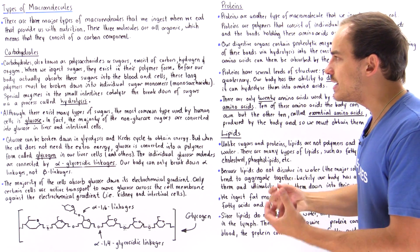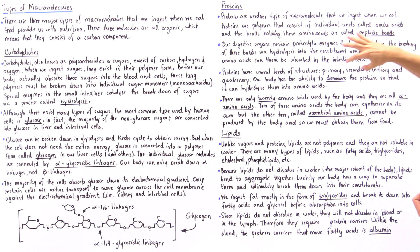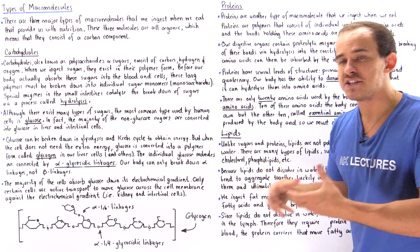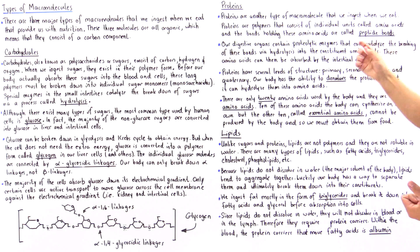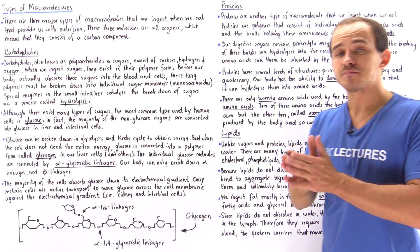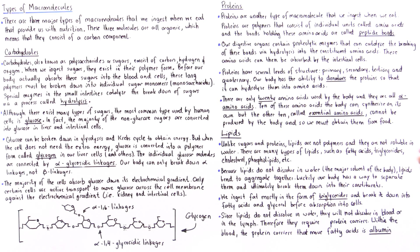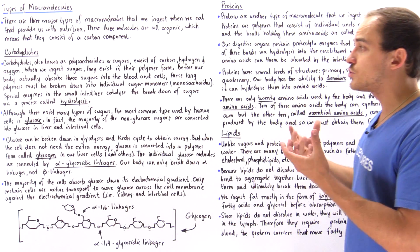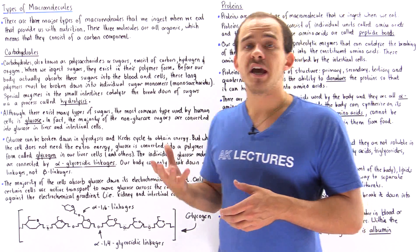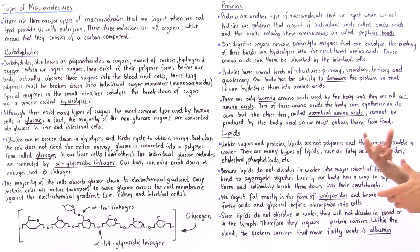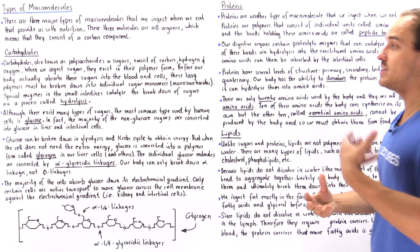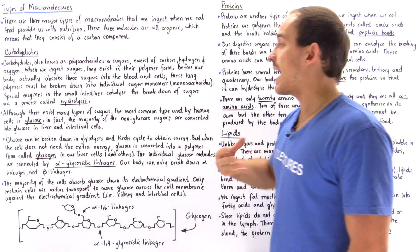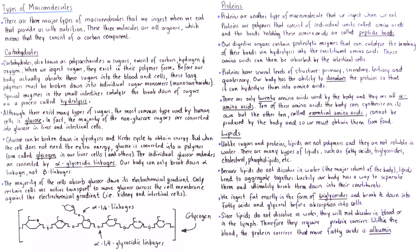When we ingest proteins, they usually come in either the tertiary or quaternary form. What our body has to do is denature these proteins — break down the protein structure into the primary form. One way the body does this is by using very high acidity: parietal cells in our stomach secrete gastric acid — hydrochloric acid — that basically denatures our proteins. Once denatured, proteolytic enzymes can hydrolyze them via hydrolysis, our catabolic reaction that breaks down these proteins.